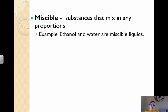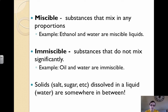A couple more vocabulary words: miscible and immiscible. A miscible liquid describes substances that mix in any proportion — ethanol and water are miscible liquids. Immiscible substances do not mix significantly; oil and water are a classic example. Solids dissolved in a liquid are usually somewhere in between, and this depends on saturation, which we'll talk about in the next video.